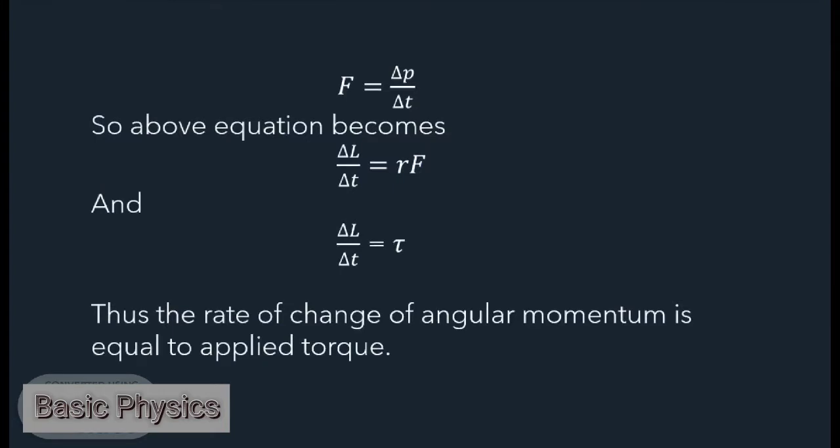The rate of change in momentum equals the applied force. So the above equation becomes delta L by delta t equals r F, which equals the applied torque. Therefore, the rate of change of angular momentum equals the applied torque.